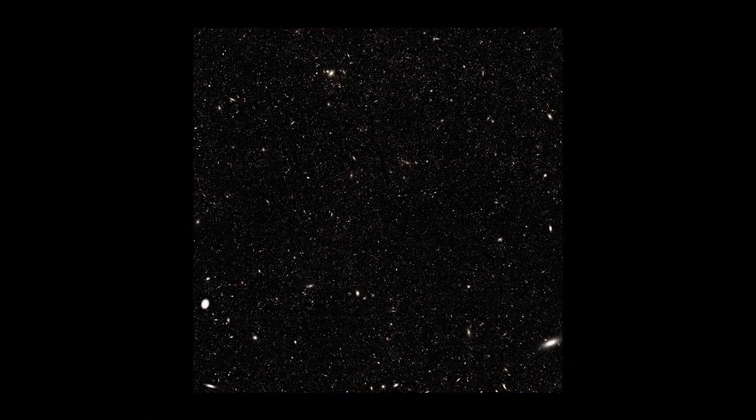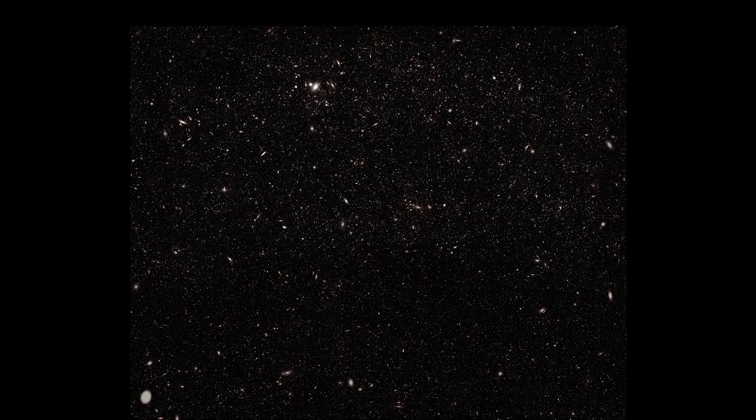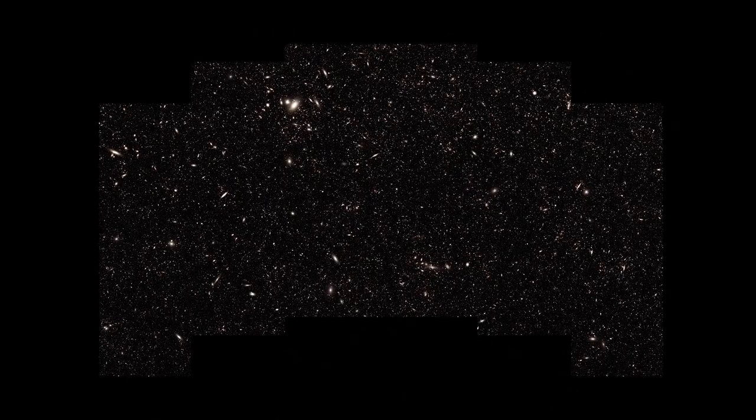The entire image contains about one square degree of sky, or about five full moons. Even a single Roman field of view contains a staggering number of distant galaxies, each one filled with billions of stars.